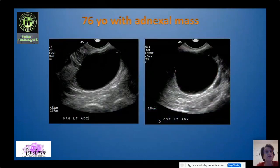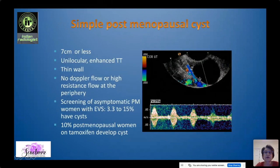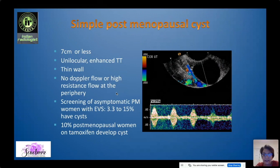In an older woman it's a little different. This 76-year-old woman has an adnexal mass of about four and a half centimeters that is completely anechoic with a thin wall — a simple cyst. Provided it is unilocular with a thin wall and no color Doppler flow or just high-resistance flow at the edge, we know that in screening of asymptomatic postmenopausal women, about 3.3% to 15% will have such cysts, and particularly 10% of postmenopausal women on tamoxifen will develop cysts. So it becomes a dilemma: when do we need to worry, and when do we need to follow them?